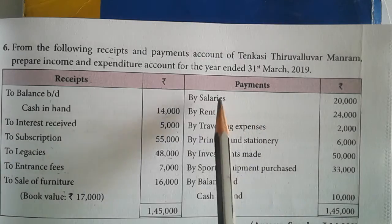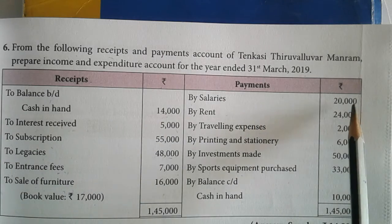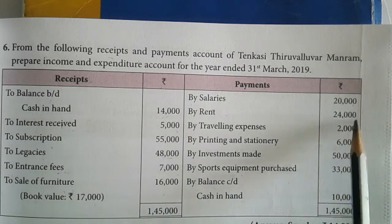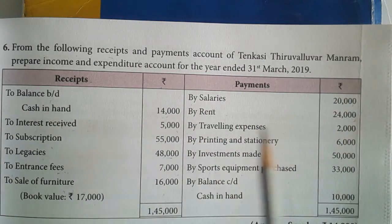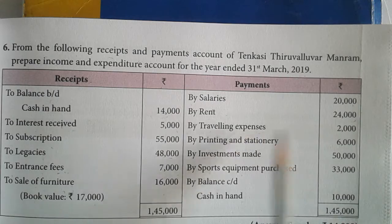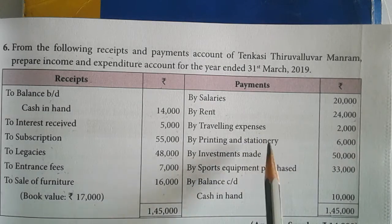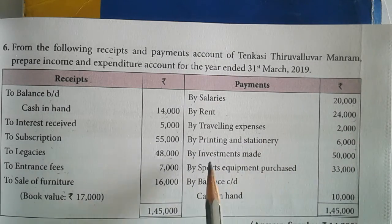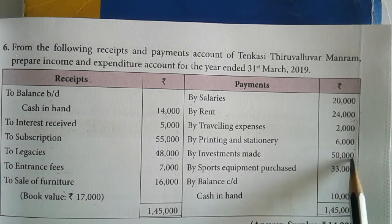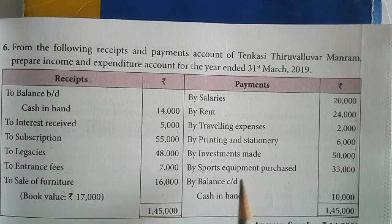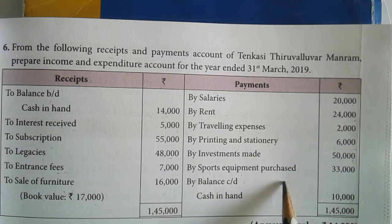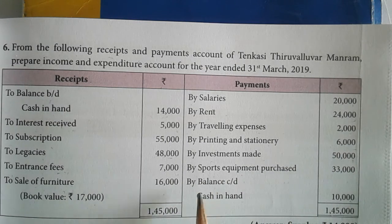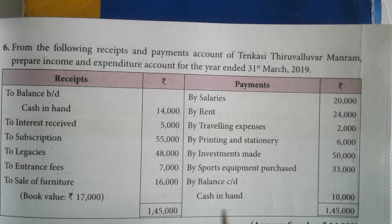Payments: salaries paid 20,000; rent 24,000; travelling expenses 2,000; printing and stationery 6,000; investment made 50,000; sports equipment purchased 33,000. Balance carried down — cash in hand 10,000.